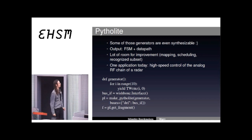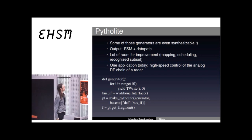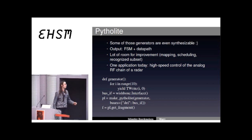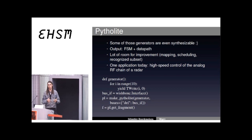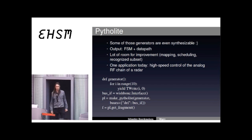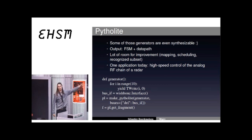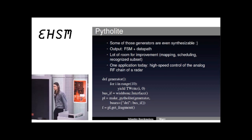Using Pytholyte, you can automatically convert those generators into a finite state machine. Here is a very simple example which generates write transactions at addresses 0 to 10 and writes 0. This subset of Python — with for loops, while loops, and many other features — can be compiled automatically to a finite state machine. You just call the function make_pytholyte, pass it your generator and the bus interface you have created, and it will automatically create FHDL containing a state machine which issues those transactions on your bus.